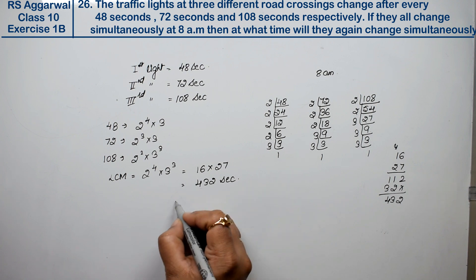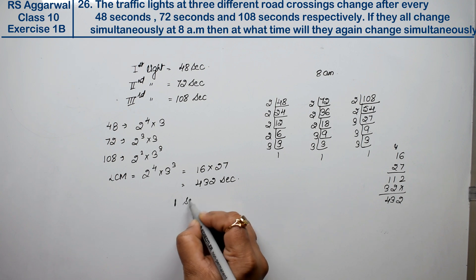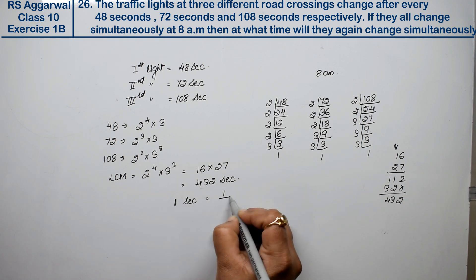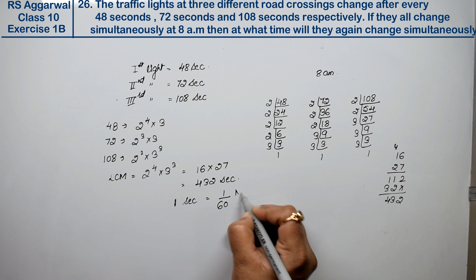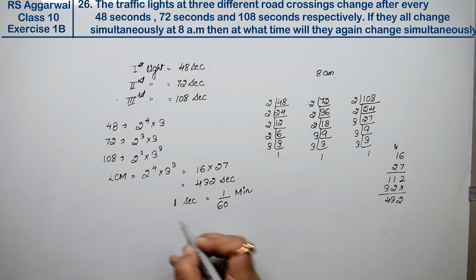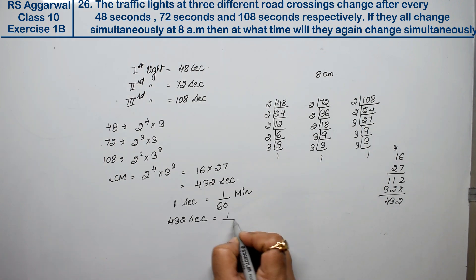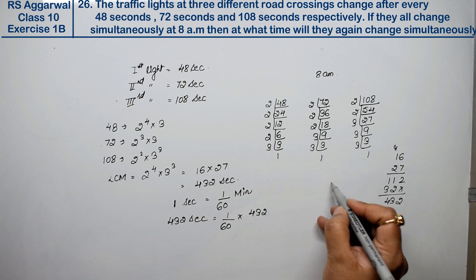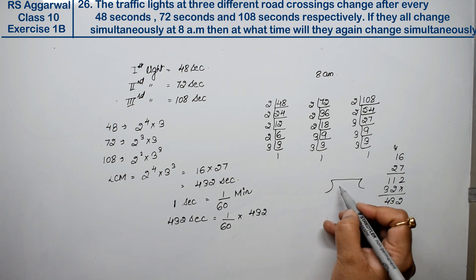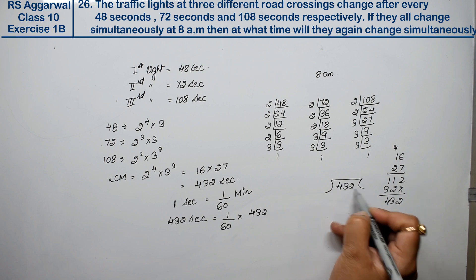We know that 1 second equals 1 upon 60 minutes, as shown in the last question. So 432 seconds equals 1 upon 60 into 432. We divide 432 by 60.